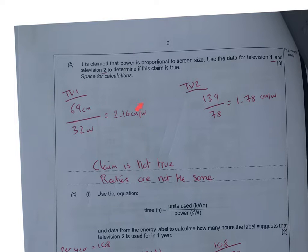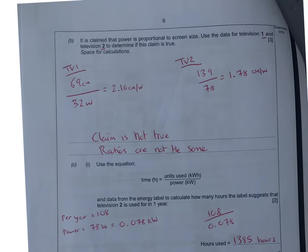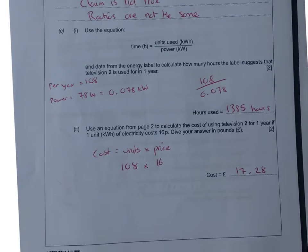We've got the screen size over the power, and we're going to come up with 1.78. So the claim is not true because the ratios are not the same. Another numeracy question for three marks that can get you tangled up.